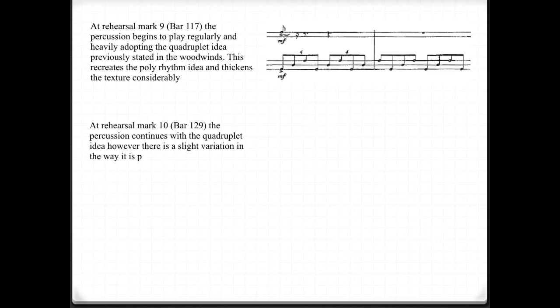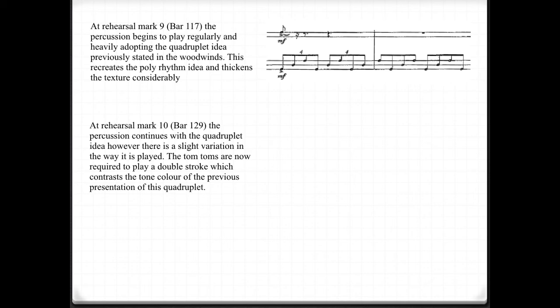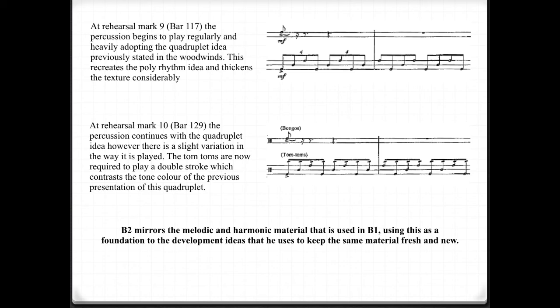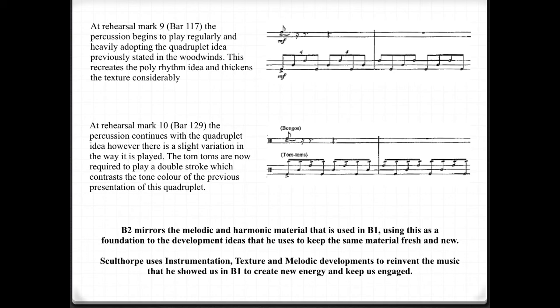By just looking at the score, you can see that the texture is getting thicker as more and more instruments are introduced. At rehearsal mark 9, or bar 117, the percussion begins to play regularly and heavily, adopting the quadruplet idea previously stated in the woodwinds — recreating a polyrhythmic idea and thickening the texture considerably. At rehearsal mark 10, or bar 129, the percussion continues with the quadruplet idea, but with a slight variation: the tom-toms now play a double-stroke role, contrasting the tone colour. B2 mirrors the melodic and harmonic material of B1, using this as a foundation to develop ideas and keep the same material fresh. Peter Sculthorpe uses instrumentation, texture, and melodic developments to reinvent the music from B1 and create new energy.